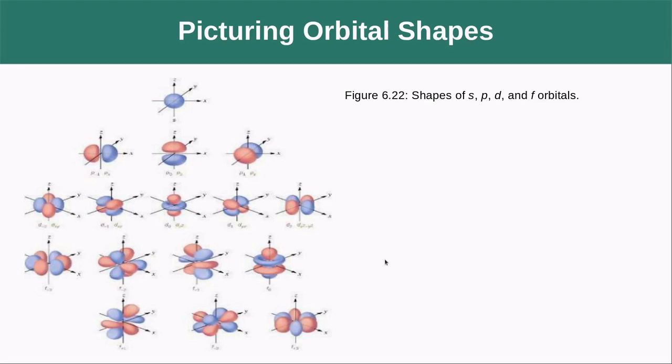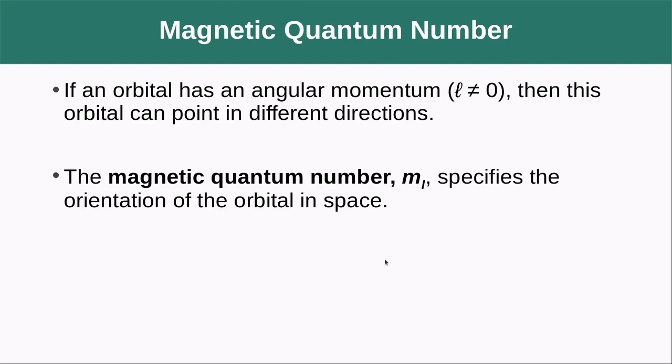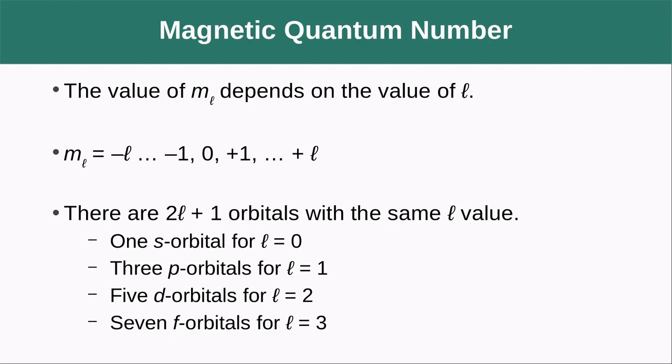The magnetic quantum number: if an orbital has angular momentum ℓ ≠ 0, it can point in different directions. The magnetic quantum number mℓ specifies the orientation of the orbital in space. The value of mℓ depends on ℓ and varies from -ℓ to +ℓ. There are 2ℓ+1 orbitals with the same ℓ value: one s orbital for ℓ=0, three p orbitals for ℓ=1, five d orbitals for ℓ=2, and seven f orbitals for ℓ=3.